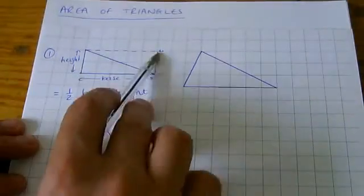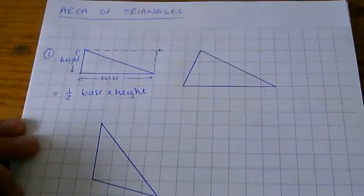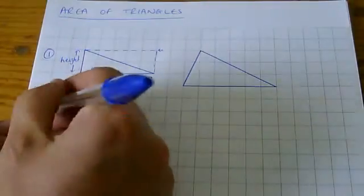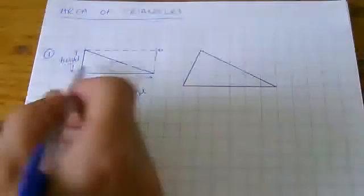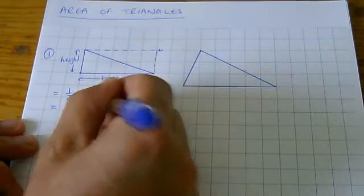So, base times height gives you the area of the rectangle, which is 10. And then, if you half it, you get the area of the triangle, which is 5 centimeters squared.